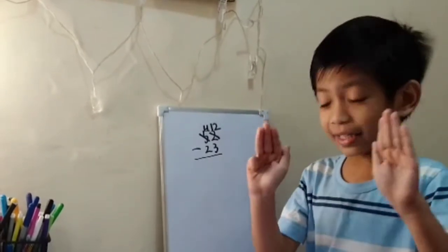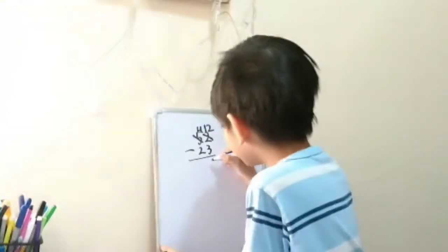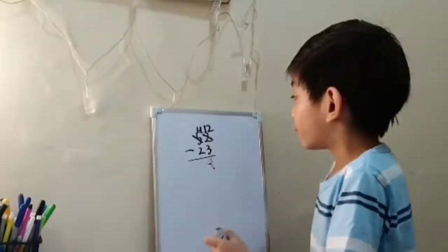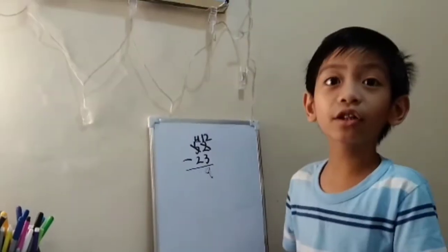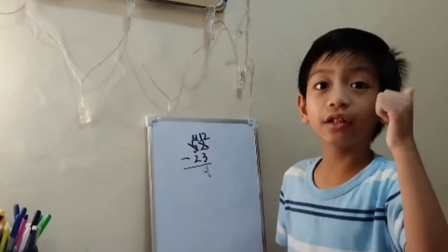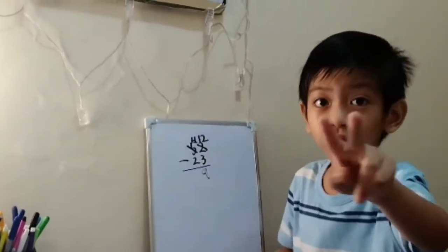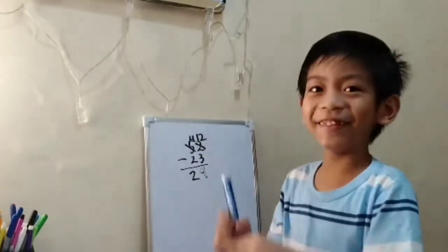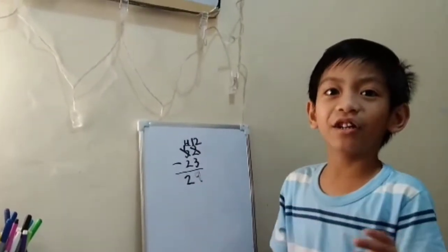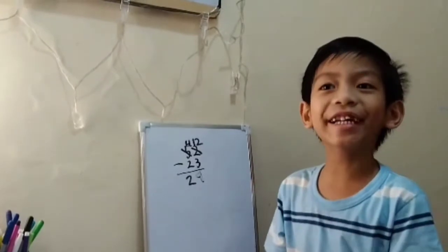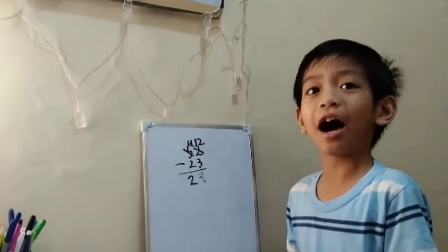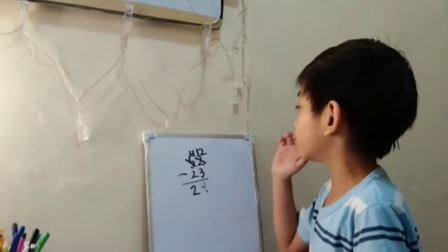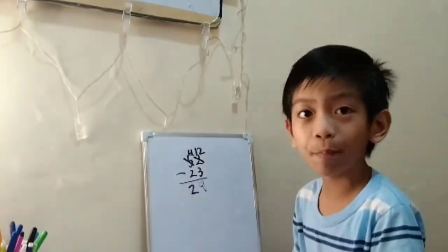It's 9. 4 minus 2 is 2. It's 29. You get it? This is like the normal subtraction but with regrouping.